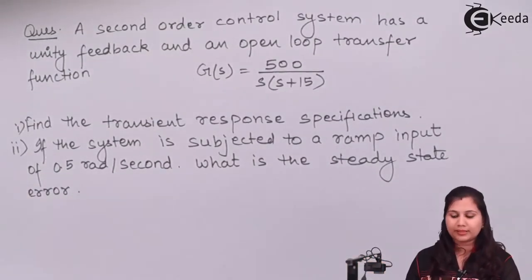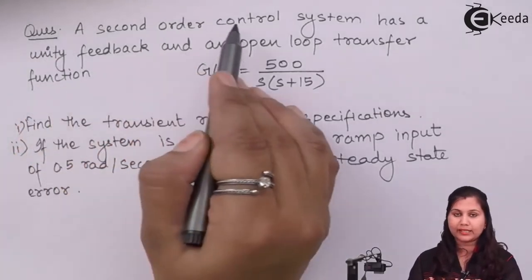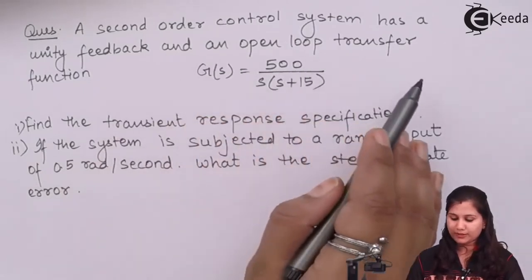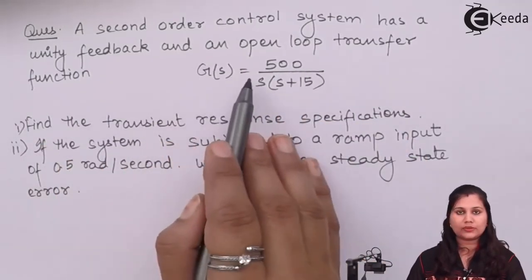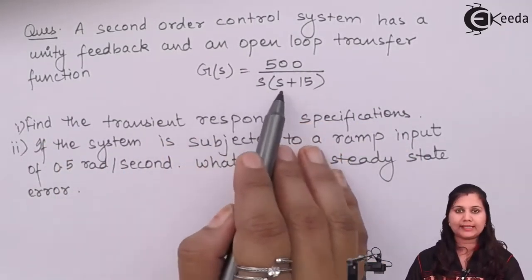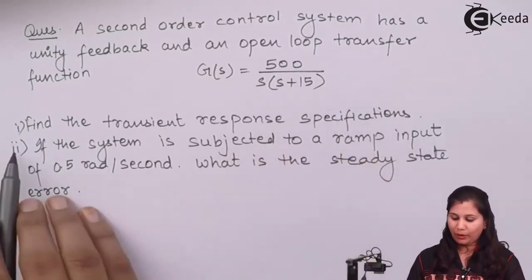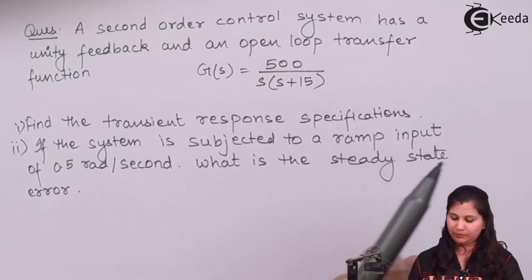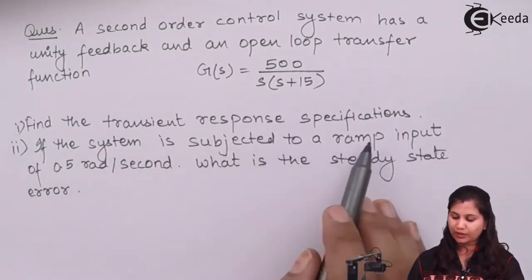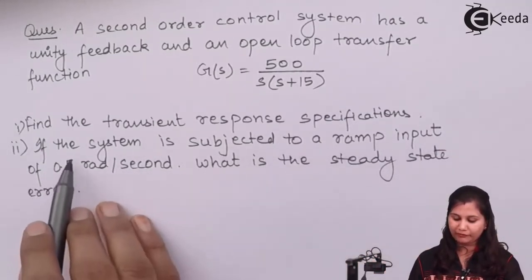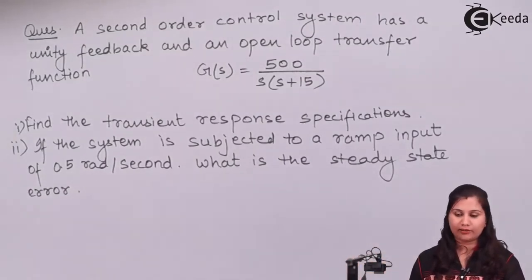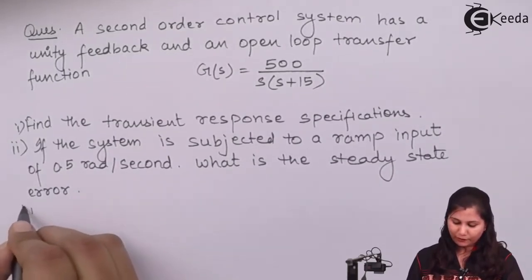Our problem is: we are given a second order control system with unity feedback and an open loop transfer function G(s) equals 500 upon s(s+50). We have to find the transient response specifications for this system, and if the system is subjected to a ramp input of 0.5 radians per second, what is the steady state error. We also have to find the time response of the system.